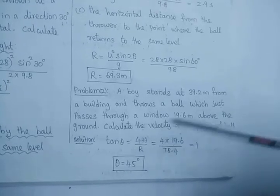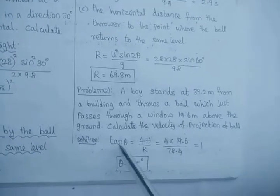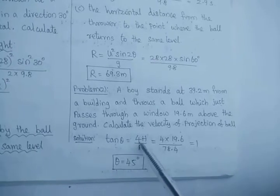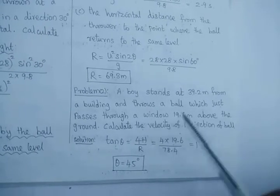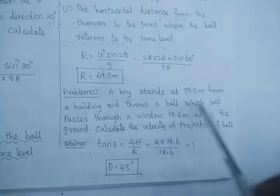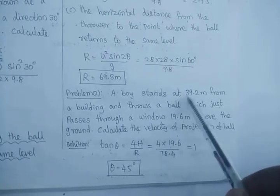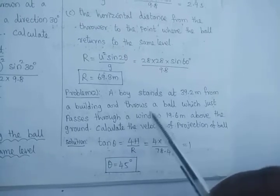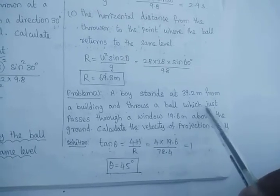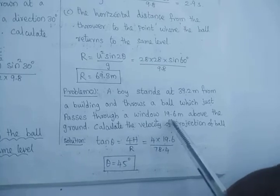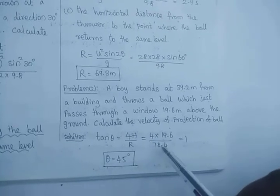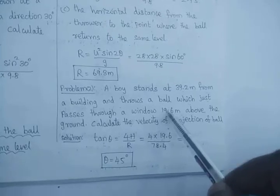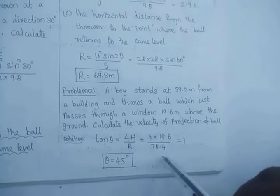The formula is tan θ = 4h / r. They have given the maximum height. A boy stands at 39.2 meters from the building and throws a ball that just passes through a window at 19.6 meters. So we take 4 × 19.6 as the height component and r as the range.